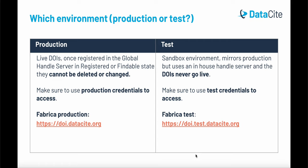Remember, there are two environments. In the production environment, DOIs are registered in the global handle server when you move them to registered or findable state. This is a live DOI and cannot be deleted or changed. Make sure you use your production credentials to access Production Fabrica. The test environment is a sandbox which mirrors production. However, it uses an in-house handle server and none of the DOIs you create in test will ever go live. Make sure you're using your test credentials to access.